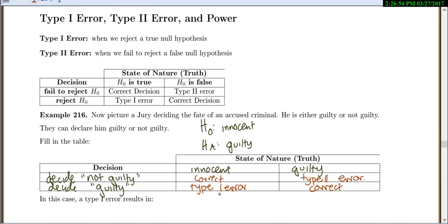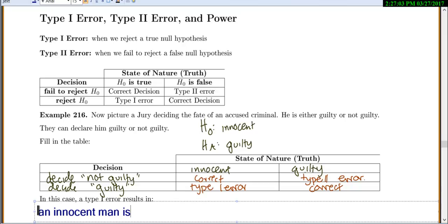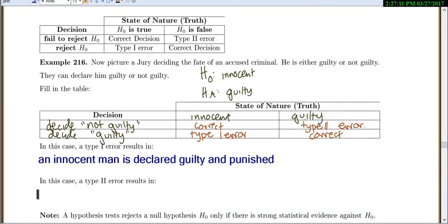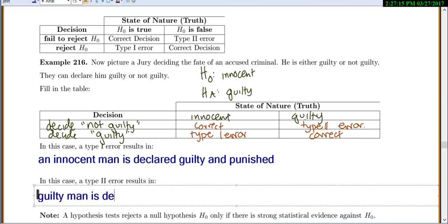In this case, a type 1 error is when an innocent man is declared guilty and punished. A type 2 error results in a guilty man is declared not guilty and goes free.